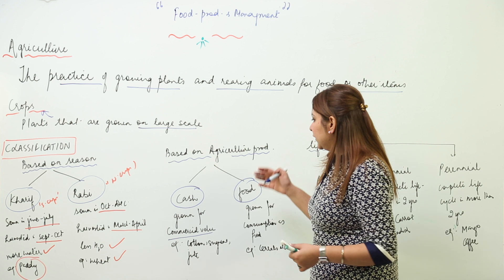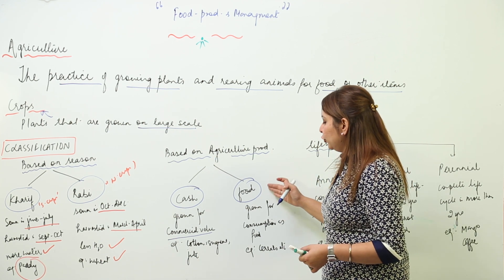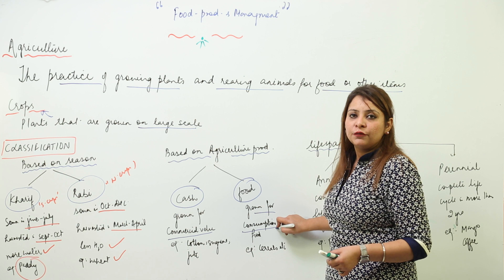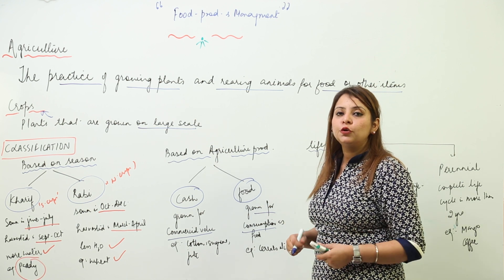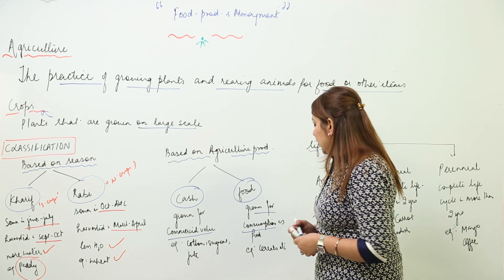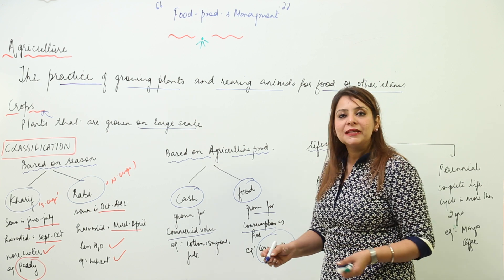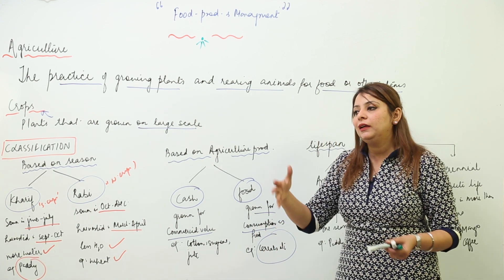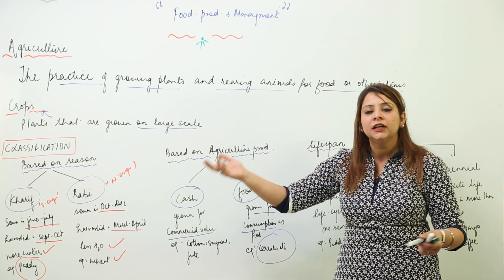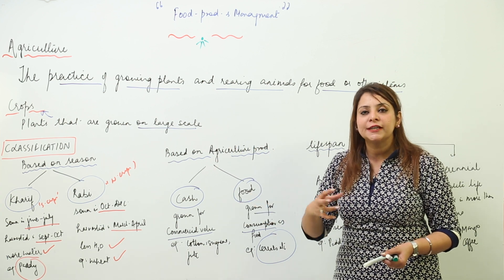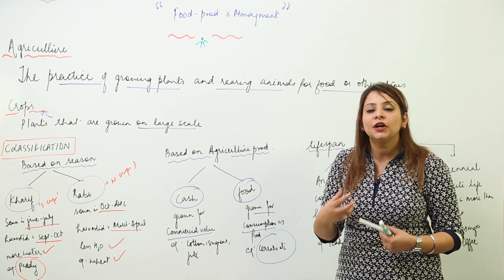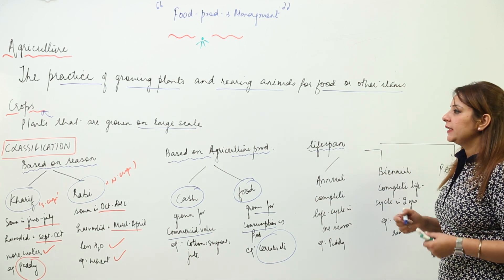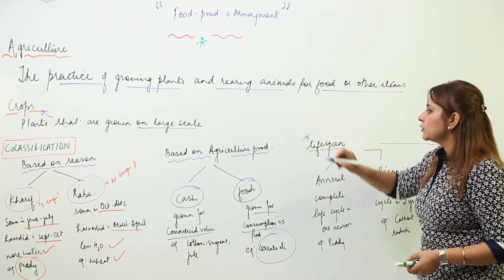Food crops are those meant for consumption — we eat and consume them as food. Examples include cereals and pulses. Unlike cash crops, food crops are not used in making non-living things; they are used as food because they provide us energy.